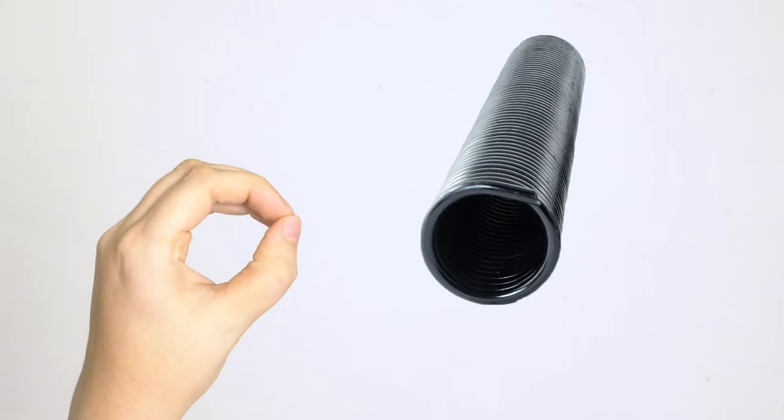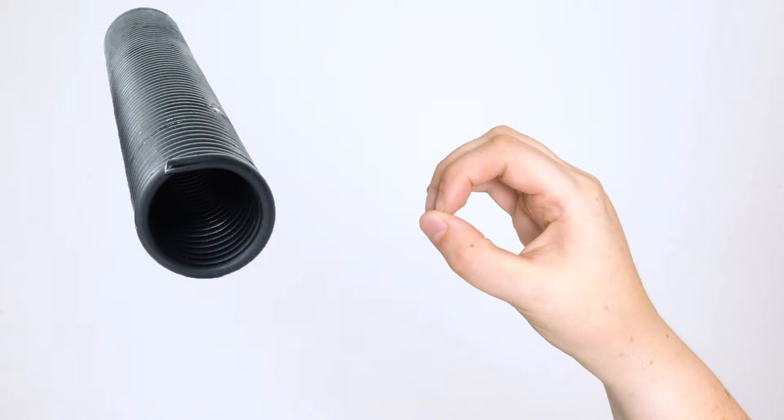Helpful trick: make an O with your index finger and thumb. Your left hand will match the coils of a left hand spring and your right hand will match the coils of a right hand spring.